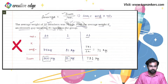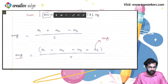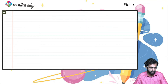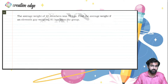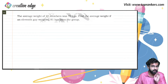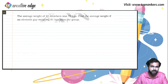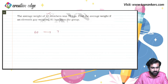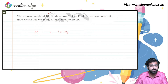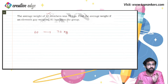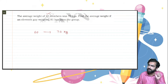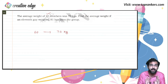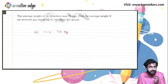Let's revisit the earlier question through this intuitive approach — you can crack it within 10 seconds. The average weight of 10 members is 70 kg, meaning on average each candidate weighs 70 kg. This is what the average represents: if 10 candidates have an average of 70 kg, then conceptually each one accounts for 70 kg.